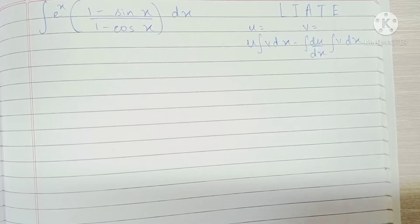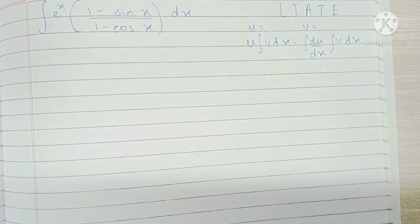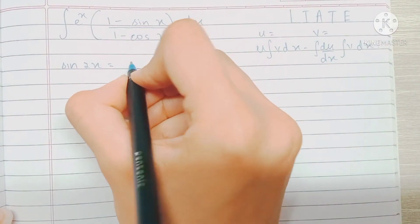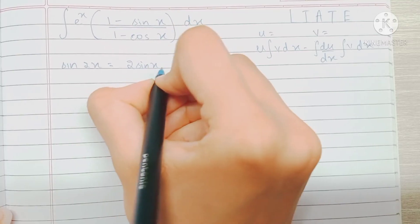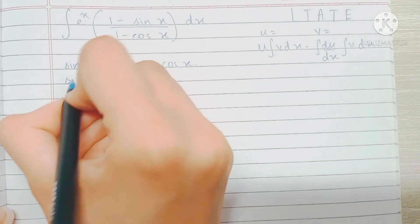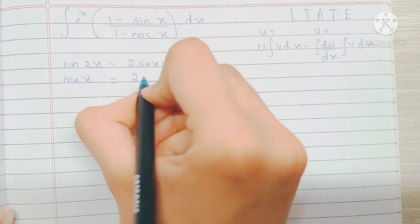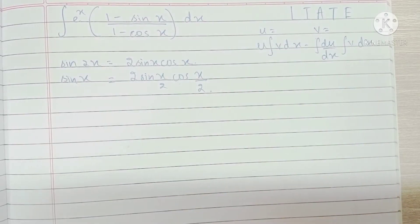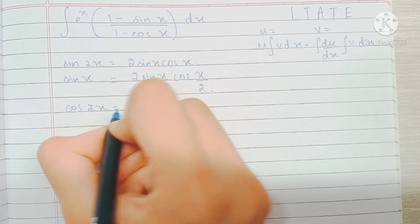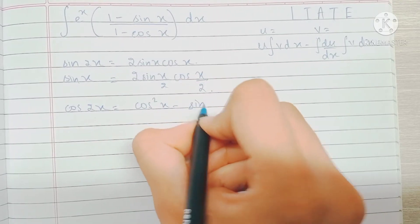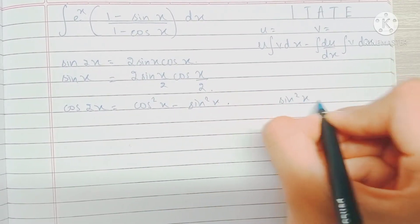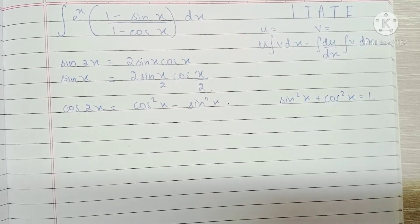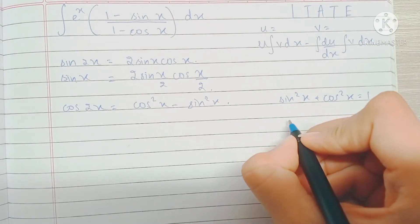First, we're going to make a small observation. We know that sin2x is the same as 2sinx·cosx, which means that sinx equals 2sin(x/2)cos(x/2). We also know that cos2x equals cos²x minus sin²x, and since sin²x plus cos²x equals 1, we can write cos²x as 1 minus sin²x.